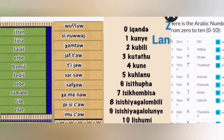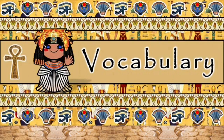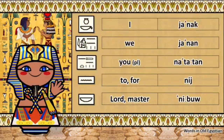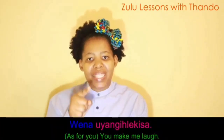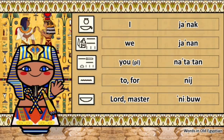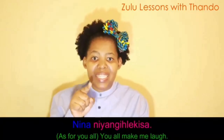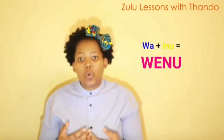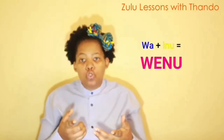That was the last number, and now to move on to vocabulary. Yonak. Mina. Yanon. Wena. Natatan. Nina. Ni. Wenu.